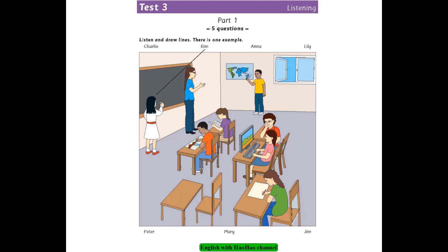5. Who is the boy who's sitting at his desk? Which one? The one who's drawing a picture? Yes, that one. He's got short hair. That's Jim. He's good at drawing. That is the end of Part 1.